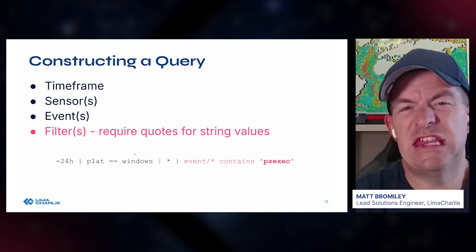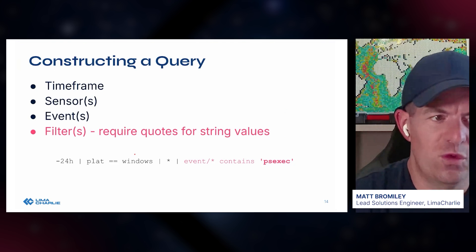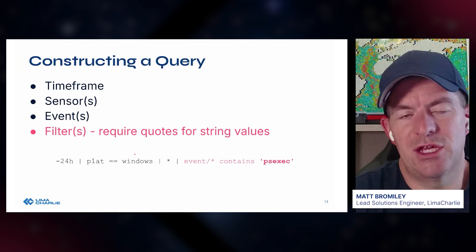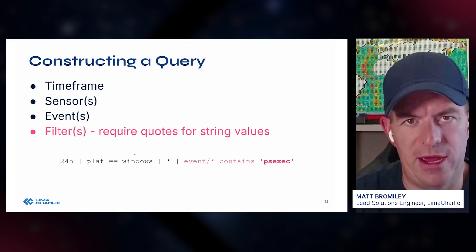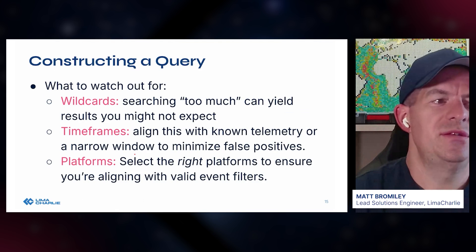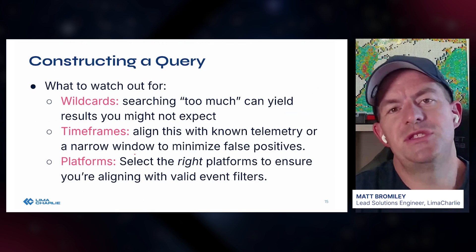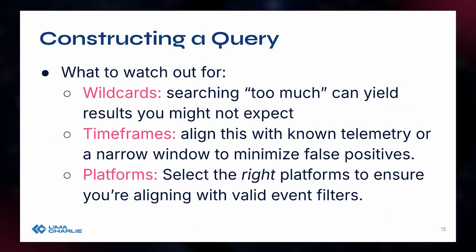The filter is the 'what' we're looking for. The actual text you're looking for often requires quotes for string values — sometimes even integers — because you're technically searching through the value of a JSON key-value pair. Watch out for searching for too much with wildcards; they might yield unexpected results or just give you way more work to do. Be careful with your time frames — align these with known telemetry and narrow windows to help minimize false positives. And don't let the system just churn through massive time frames where you end up digging through thousands of rows.